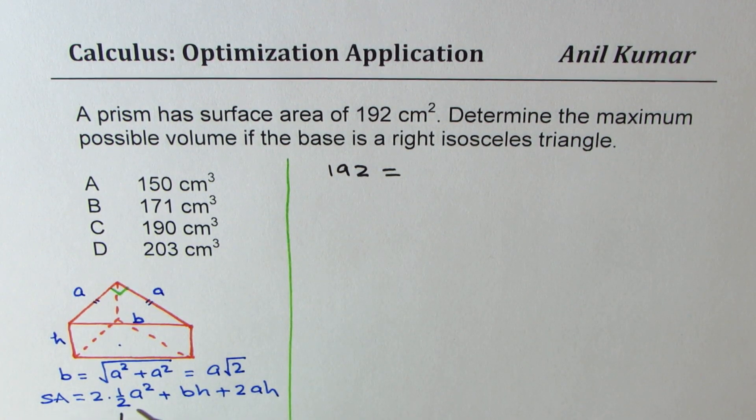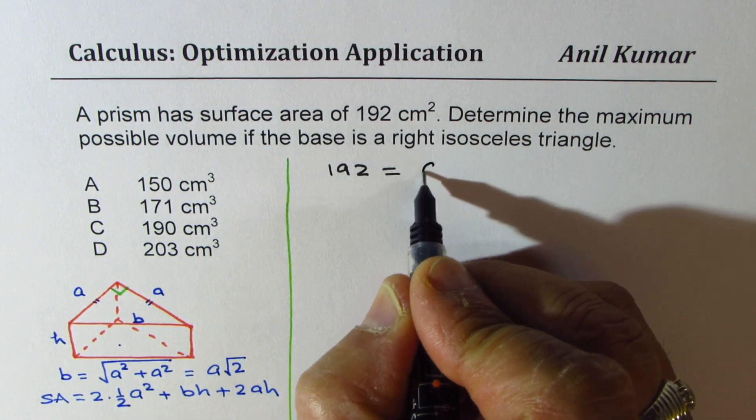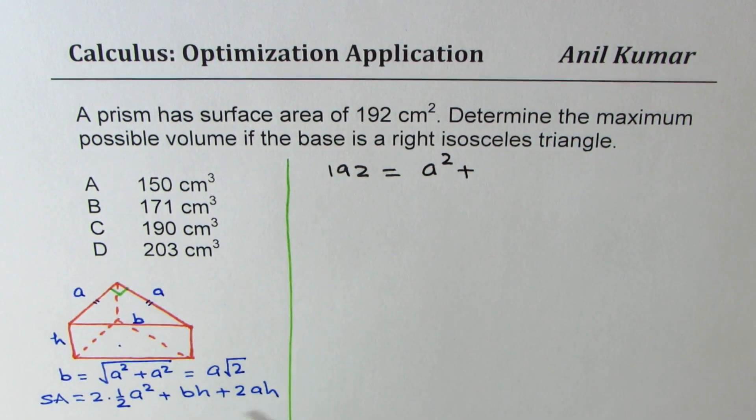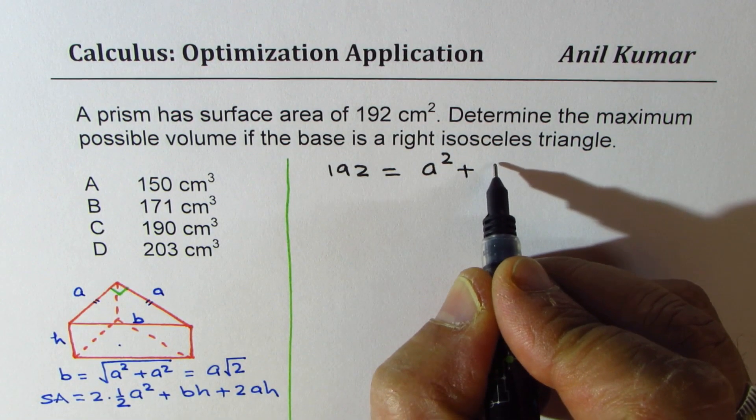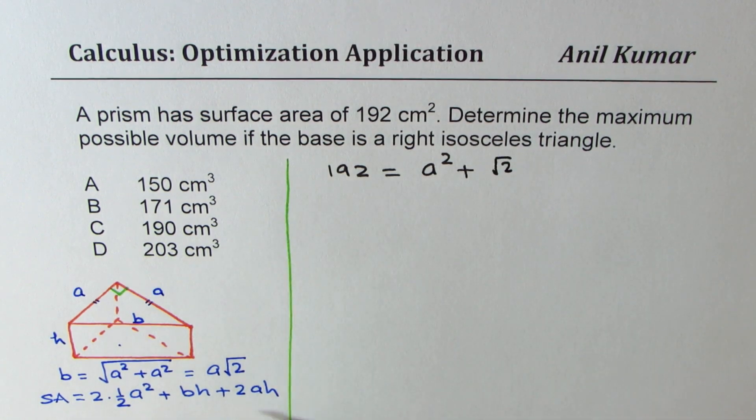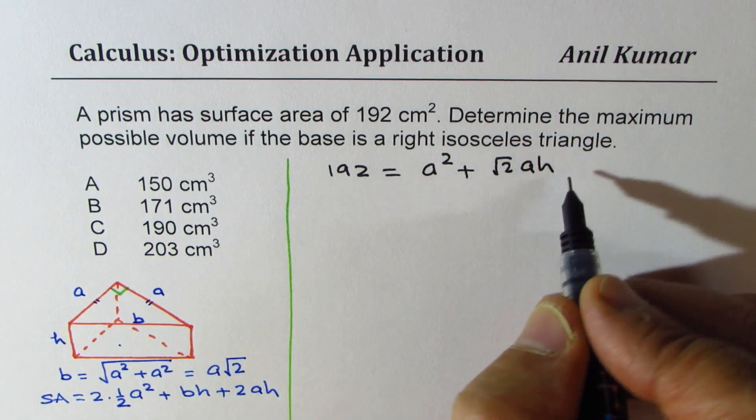Since we know what surface area is we could substitute 192 for that. Now half and half and half and 2 cancels. We get a square plus base is a square root 2. So I'm writing square root 2 and then a and h.